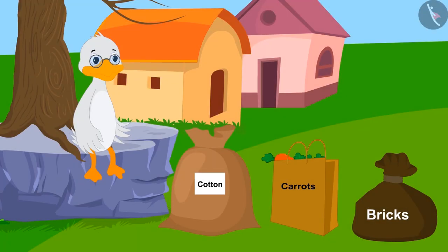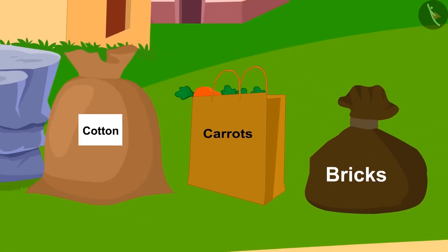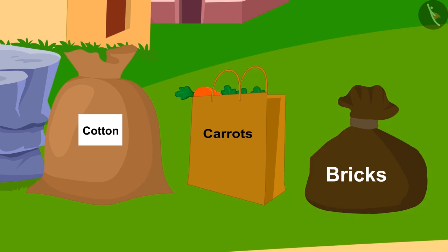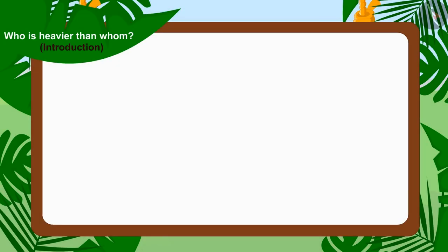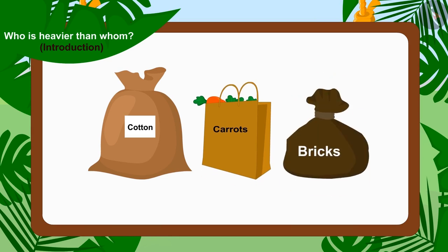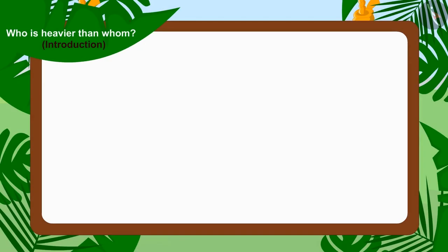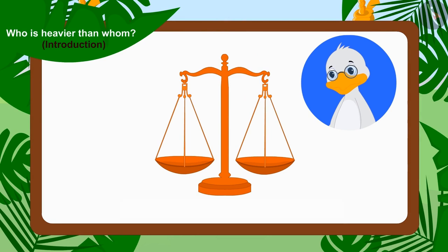Uncle noticed that the three contestants brought different items in different bags and sacks. Therefore, we cannot compare their weight. So, what can we do now? Uncle brought a weighing scale.